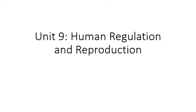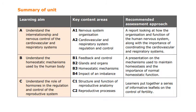We are going to start today a new unit, which is Unit 9, the Option Unit. As part of this Option Unit, we are going to be using three pieces of coursework. They are all about the nervous system, the maintenance of a constant internal environment, and reproduction. We're going to start today by looking at Section A: the interrelationship between the nervous control of the cardiovascular system and the respiratory system. So basically, we're looking at the control of the heart rate and breathing, starting with nervous system organisation.